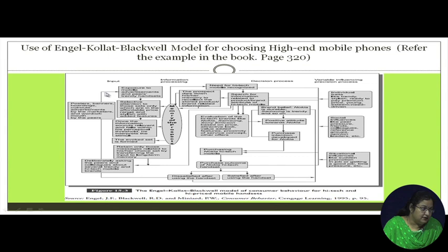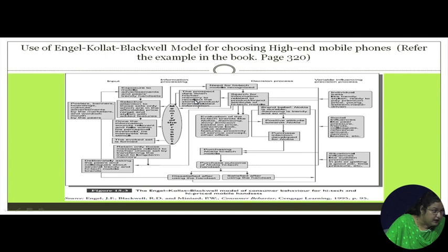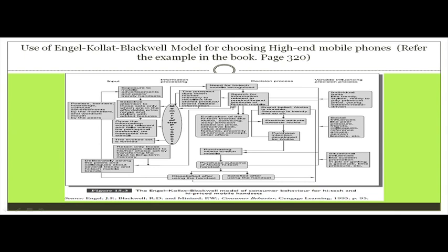The second part is the information input stage, which is quite similar to the stimulus input stage in the Howard-Sheth model. In this stage, the consumer first tries to recollect product or brand-related information from memory — known as internal search. For example, when choosing a high-tech mobile, the prospect first tries to remember advertisements they were recently exposed to, what their peer groups have used, and what features and discussions surround those brands.